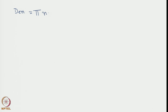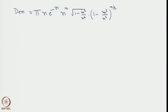Then it will have e to the power minus n and n to the power n. Then the terms are square root of 1 minus n squared by n squared. Then we will have 1 minus n squared by n squared to the power n by 2, and here 1 plus m by n divided by 1 minus m by n to the power m by 2.